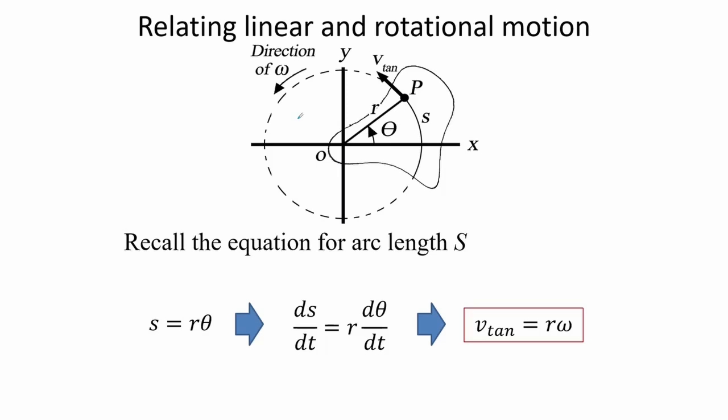We can relate the two types of motion: rotational and translational. We revisit tangential velocities here. The tangential velocity is the velocity that is tangent to the curved trajectory or path of the object, and it is derived from the arc over time derivative.